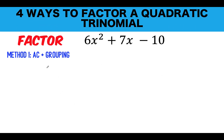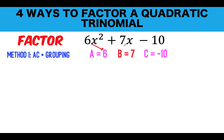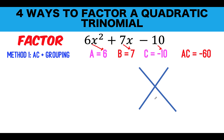Let's call the first method AC plus grouping. Some teachers call this the AC plus grouping method. First, we are going to identify A, B, and C. So our A is 6, our B is 7, and our C is negative 10. Then we need to multiply A times C. So 6 times negative 10 is negative 60, and we form this X shape.